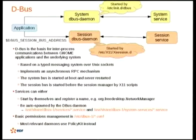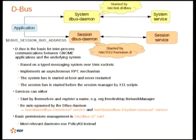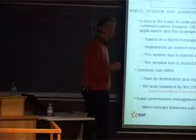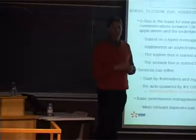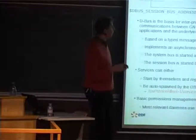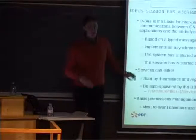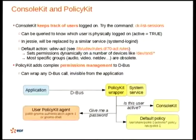This holds for both system and session demands. These are the files which define what binary to spawn if you want to access a service. DBUS implements a basic permissions management depending on the call you want to make. You can say this or that group is authorized to make that call. But it is not widely used because we have something much better, which is PolicyKit.